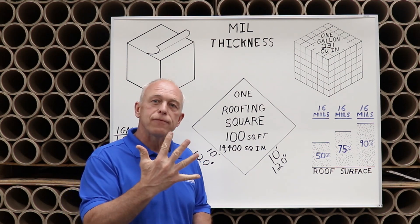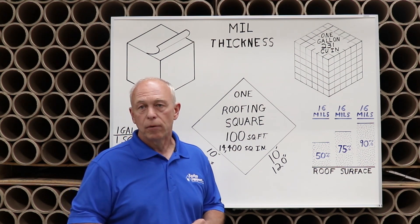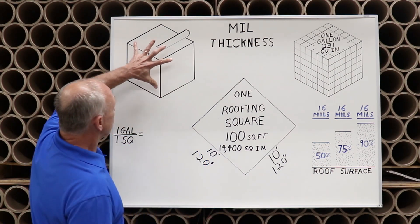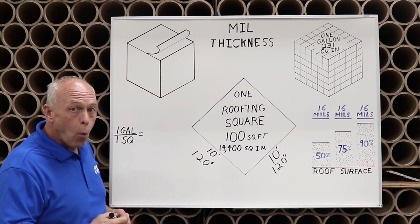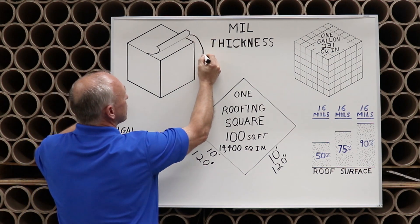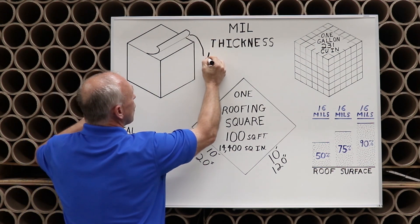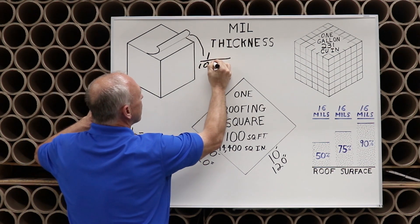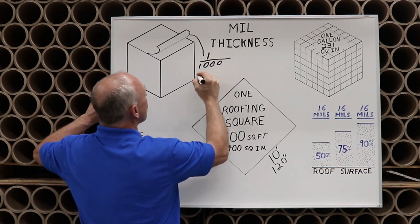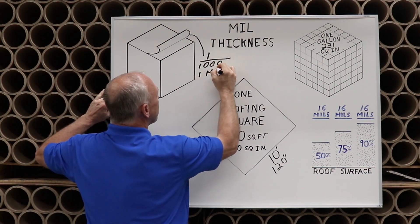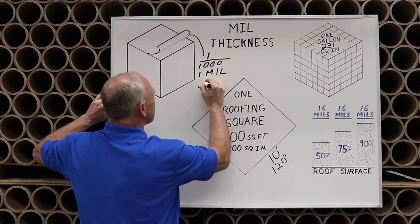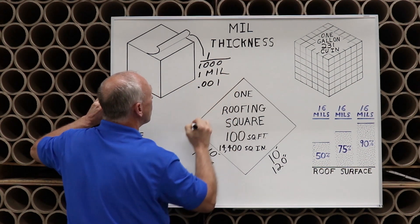There are five key concepts when it comes to mill thickness of roof coating. Number one: if we take one cubic inch and peel off one one-thousandth of an inch, we call that one mil, or 0.001.